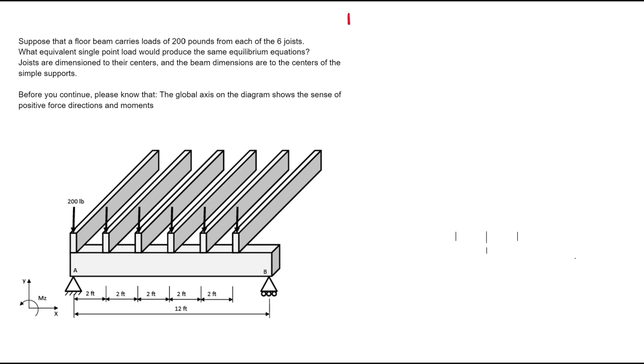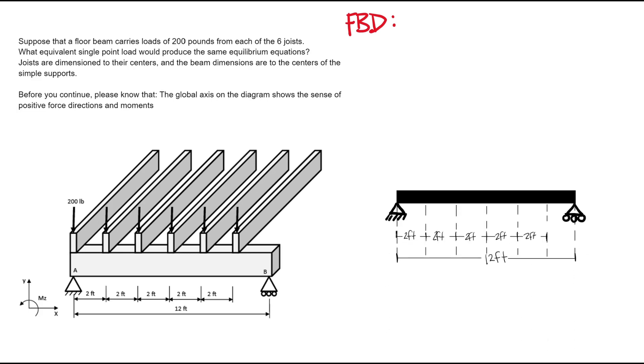We're going to first start by drawing your free body diagram. Here we have the beam and all the measurements and the different supports. Here is our positive axis, A and B. Here we have all the different six loadings from the joists and they are each 200 pounds acting two feet apart from each other starting at point A.